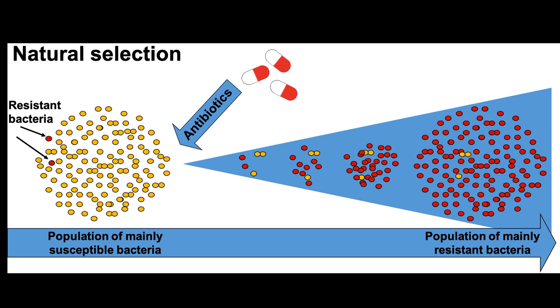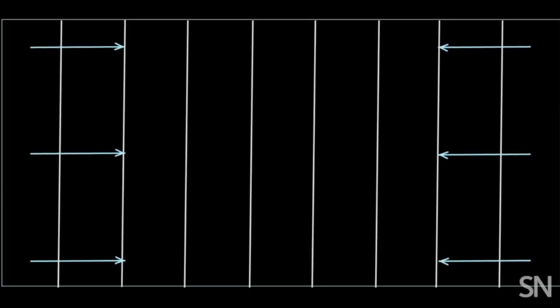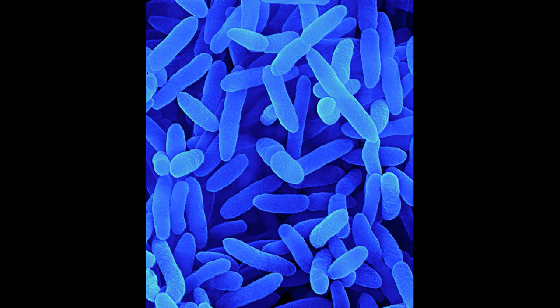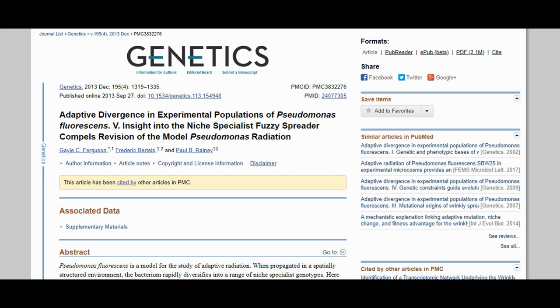Antibiotic resistance is a trait that can rapidly evolve in bacterial populations. For example, there is a 2016 video by Science News, linked in the description, that shows E. coli adapting over the course of 11 days to increasingly concentrated antibiotics. Another bacterium, Pseudomonas fluorescens, is popular because it easily develops mutations that change its cell morphology, and these mutations can be correlated with particular environments and selective pressures. For example, the 2013 paper adapted divergence in experimental populations of Pseudomonas fluorescens, insight into the niche specialist fuzzy spreader compels revision of the model Pseudomonas radiation, discusses the exact mutations involved in the origination of the fuzzy Pseudomonas morphotype.